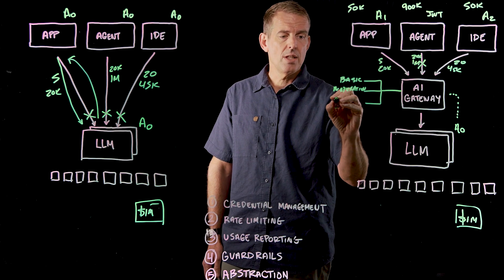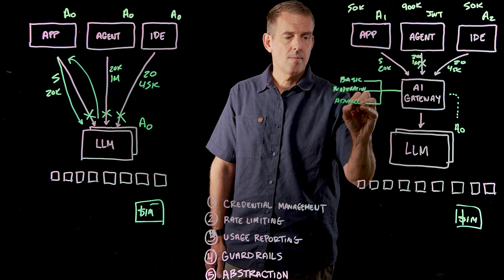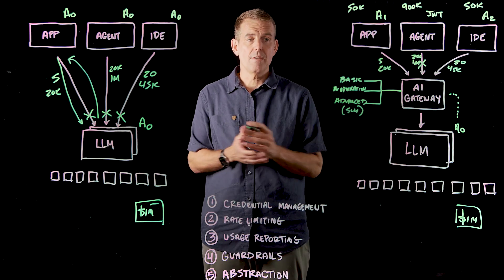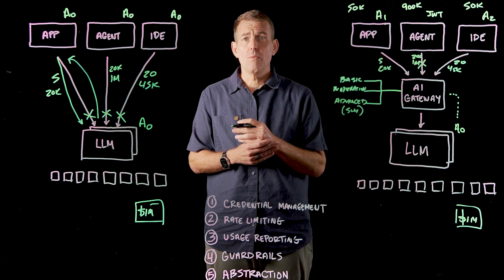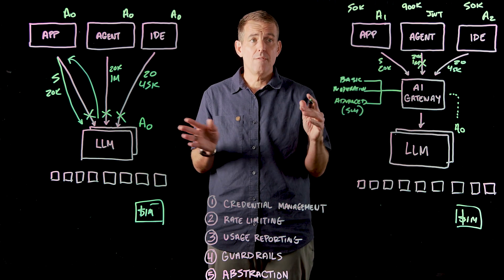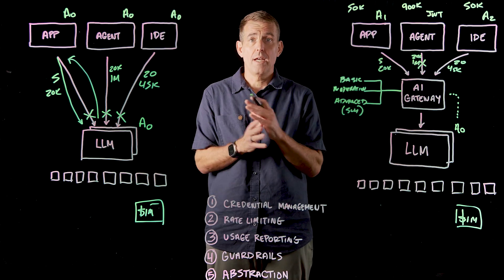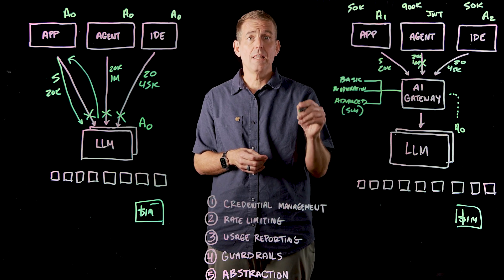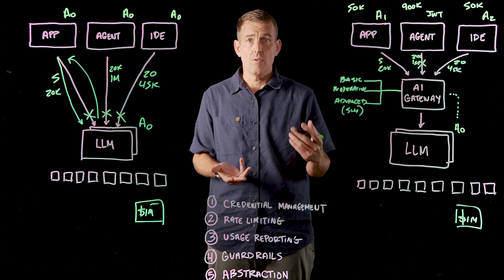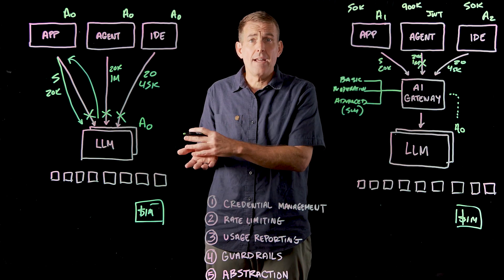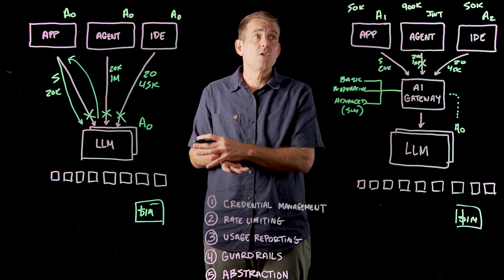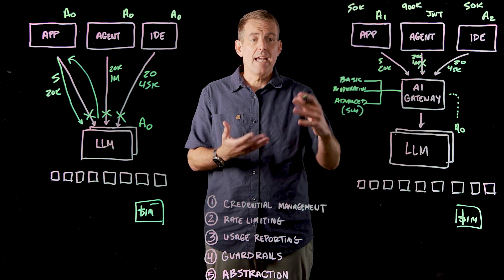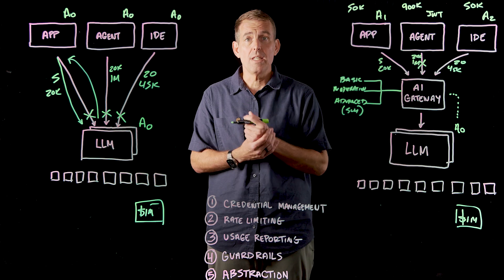Finally, we support what we call advanced guardrails. As an example, you could train a small language model — say an 8 billion parameter model fine-tuned with around 500 examples of data types or prompt types you don't want to see — and execute it inline in the request path as a semantic guardrail. Instead of matching on specific data patterns or signatures, you're doing semantic controls: is this request suggestive of something problematic? That small language model can be integrated directly with the AI gateway.